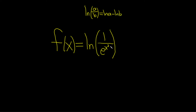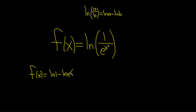So here, our a is 1 and our b is our bottom piece. So we'll start by rewriting our function. f of x is equal to the natural log of the top piece, so 1, minus the natural log of the bottom piece, so of e to the x squared.